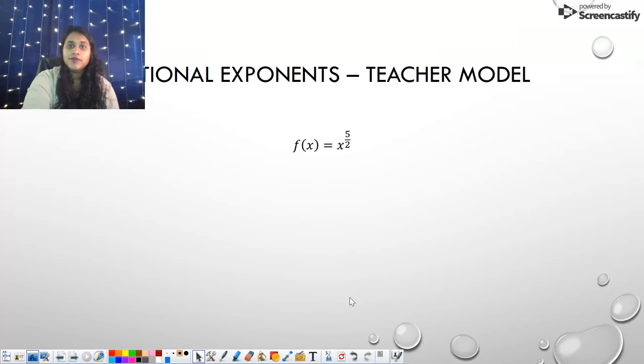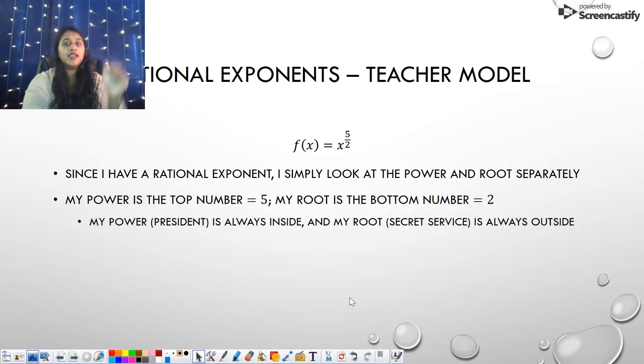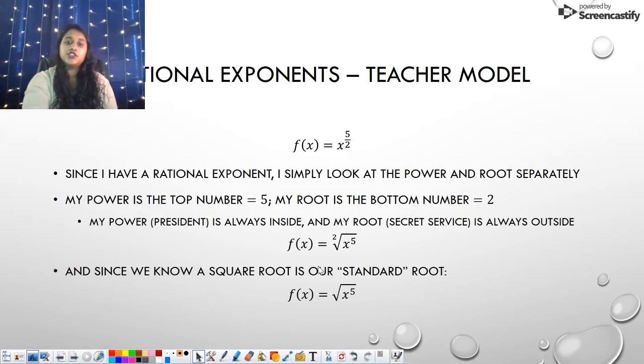I have one more example to show you. We have now x to the 5/2. Again, look at them separately. What's my power? 5. What's my root? 2. So my little president is going to be on the inside. My secret service guy is going to be on the outside. So there it looks like. But here, another recall. What is this? If I have a 2 on the outside of my root, isn't that simply the same as saying the square root? So we can just standard root that and show that as the square root of x to the 5th.